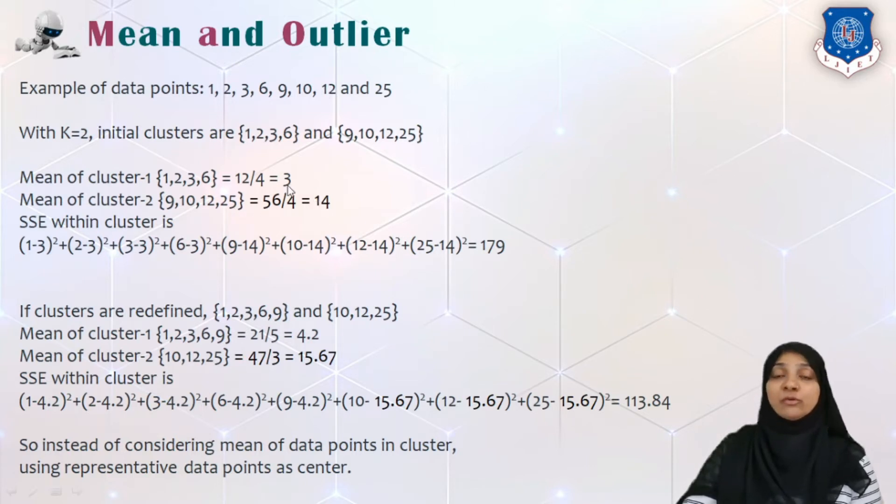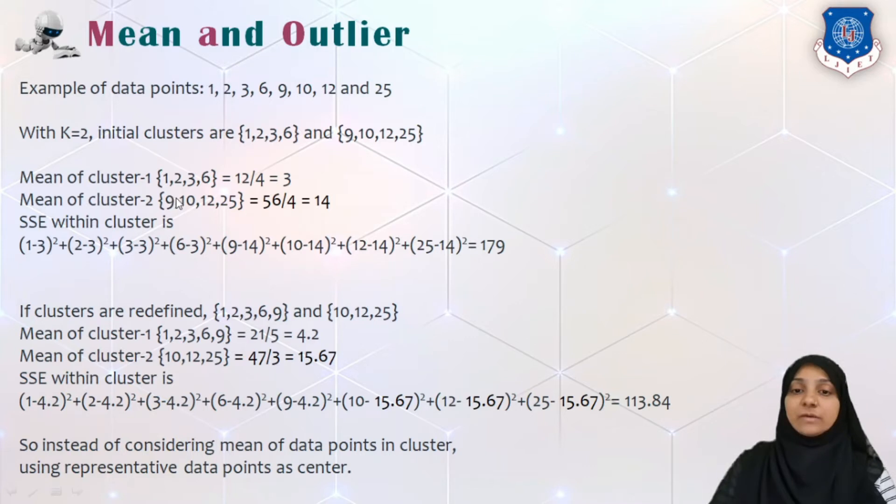Now using these two new values of mean we will calculate the standard error. So sum of standard error is calculated as the data point minus center of the cluster squared and sum of all terms. So we will calculate 1 minus 3 squared plus 2 minus 3 squared plus 3 minus 3 squared plus 6 minus 3 squared, and for the second cluster we will calculate sum of squared errors as 9 minus 14 squared, 10 minus 14 squared, 12 minus 14 squared and 25 minus 14 squared. So this would come out to be 179.